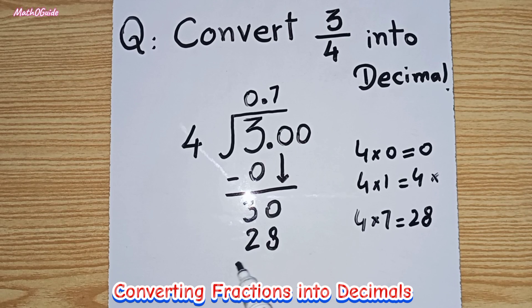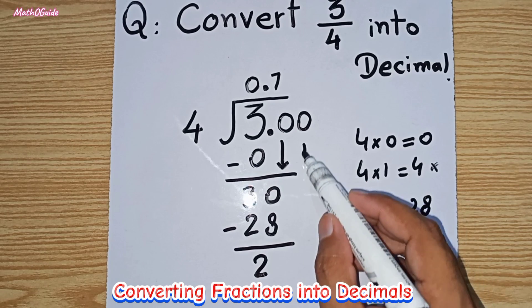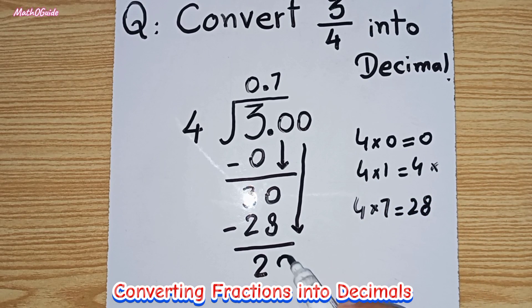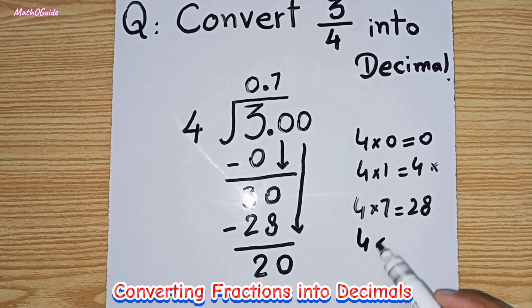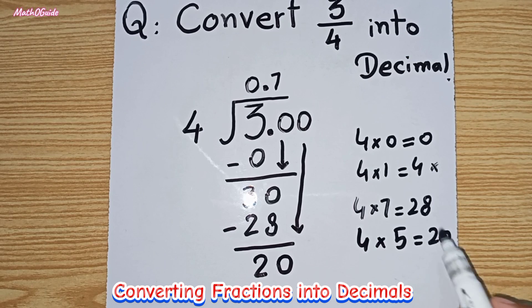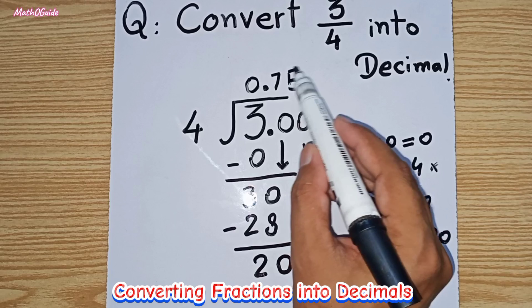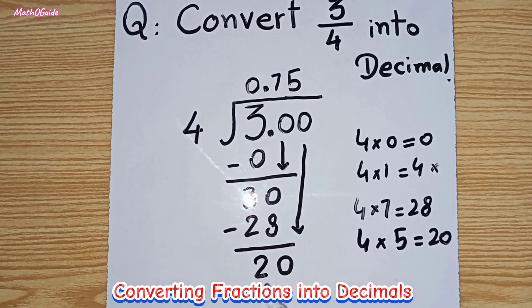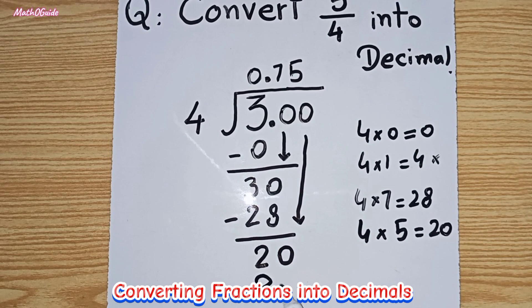Now you can subtract. 30 minus 28 will become 2. Now you can bring down another zero, so it will become 20. We know that 4 times 5 is 20, so this is our last factor.